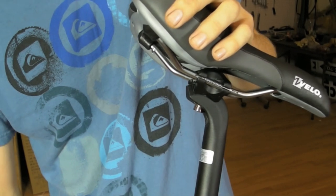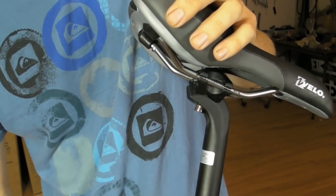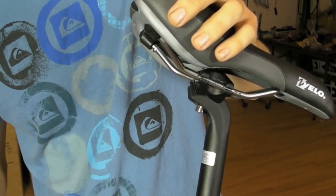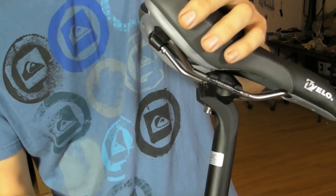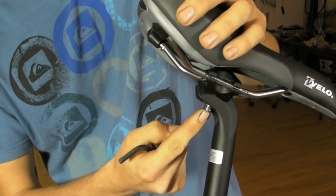Today we're going to show you how to adjust your saddle on your road bike or any bicycle for that matter. What you'll need is a 6mm Allen key, like so, to loosen up this main bolt back here.